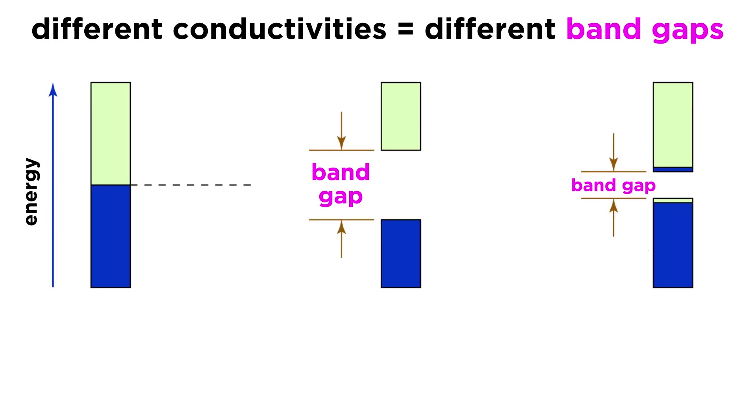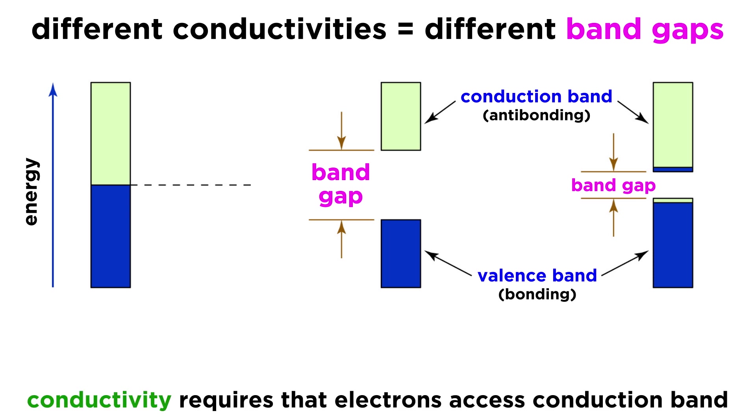Comparing substances with differing conductivities, we will notice something called a band gap, which is a gap in energy between the bonding orbitals, or valence band, and the antibonding orbitals, or conduction band, named as such because electrons must access these orbitals in order for the substance to conduct electricity.